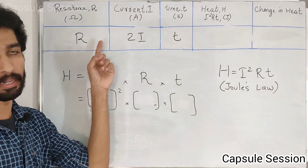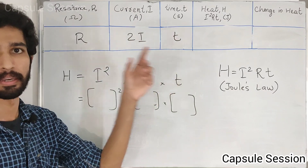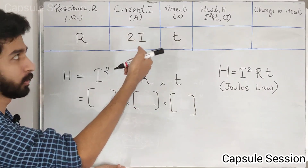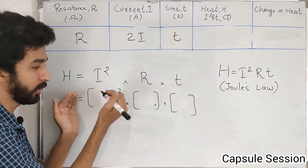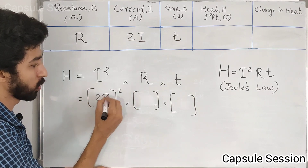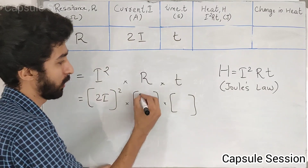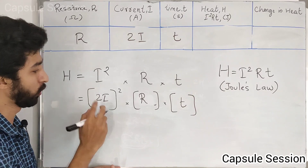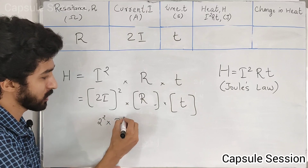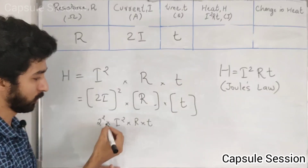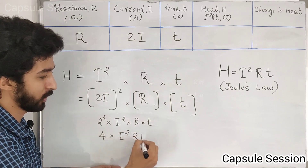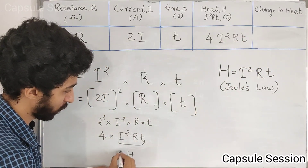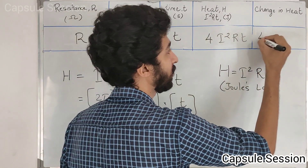In the next step, the value of the current is 2I and time is 2T. The value of I²R becomes 4I²R, so the value of I²RT is 4I²RT. So the value is 4 times heat. So the change in heat is 4 times.